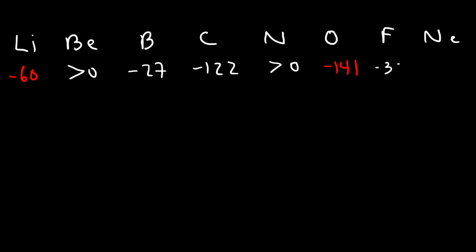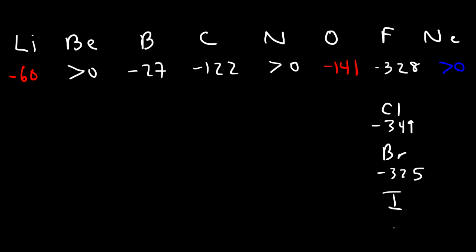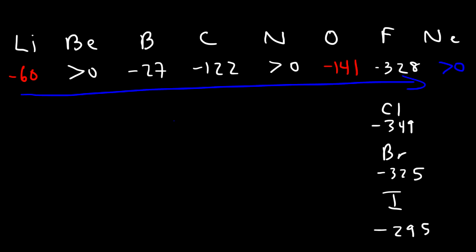Oxygen is negative 141, fluorine is highly exothermic at negative 328, and the noble gases are endothermic upon addition of an electron. Looking at chlorine, bromine, and iodine: chlorine is about negative 349, bromine negative 325, and iodine negative 295. As you go down the group it becomes less exothermic, though chlorine is an exception.